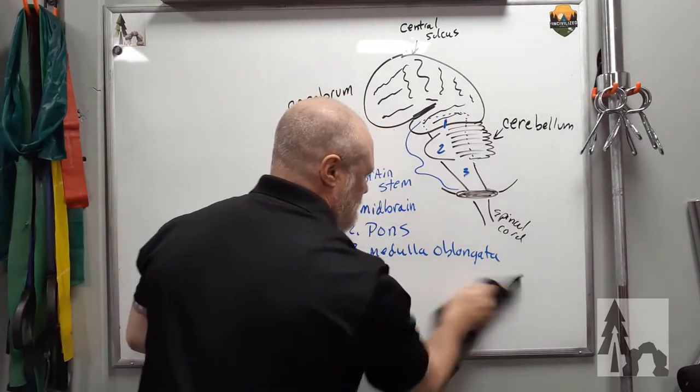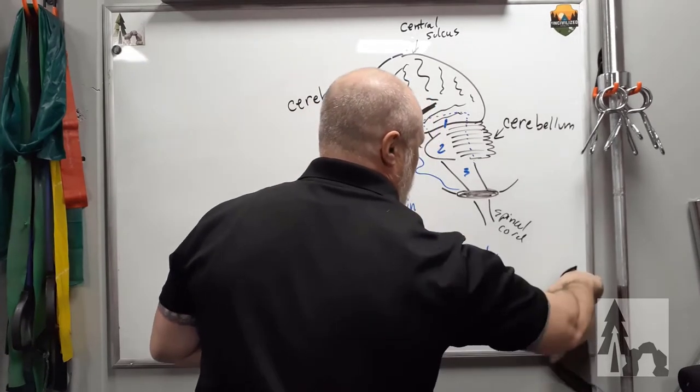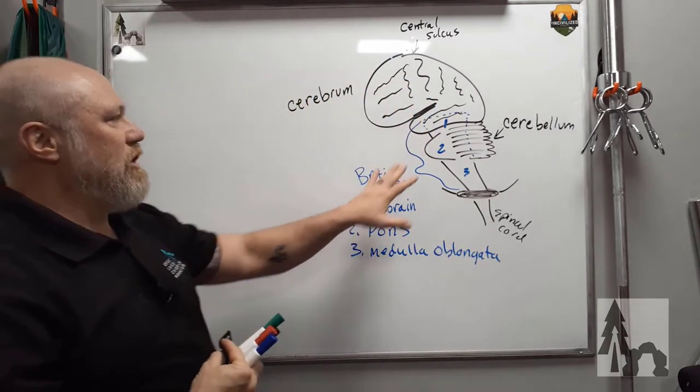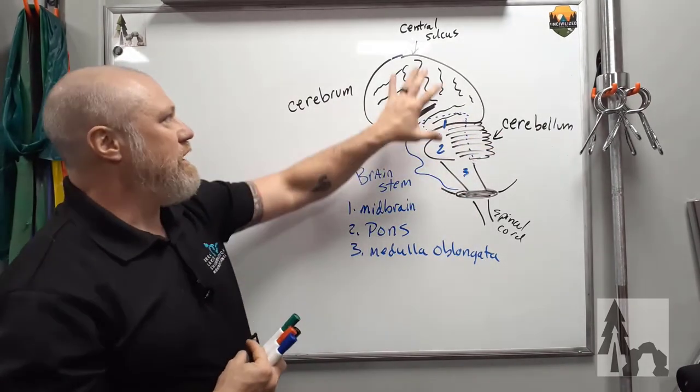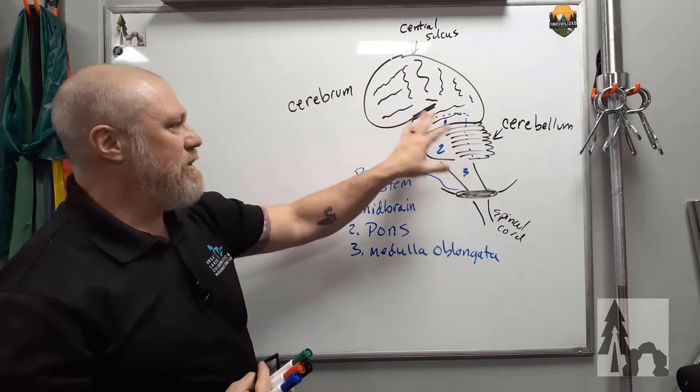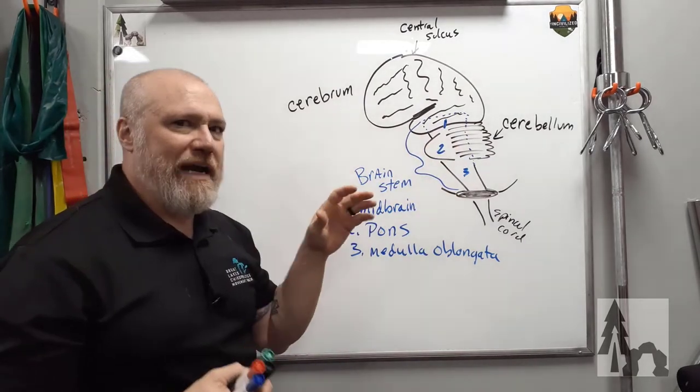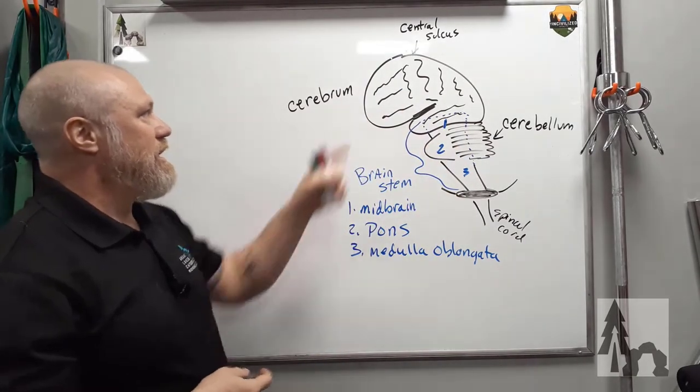Which no one knew about until Waterboy came out in theaters. So, these are the big divisions of the central nervous system portion that's in your skull. Right? Your cerebrum, your cerebellum, and your brain stem. Those are, when people say your brain, that's usually what we're talking about.